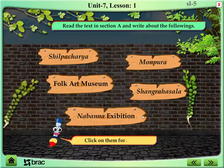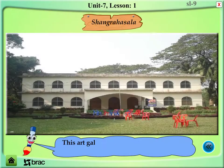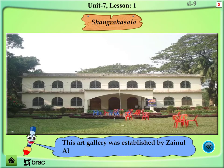Shongroho Shala: This art gallery was established by Zainul Abidin in 1975 to keep and display his own works.